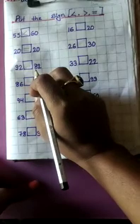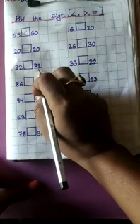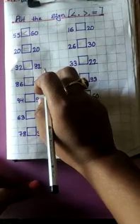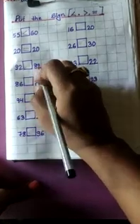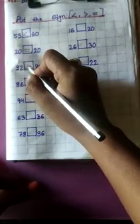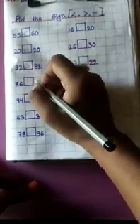Now next: 92 and 82. 92 is greater than 82. This symbol — jo bada hai, uske side mein yeh muh khula hoga.